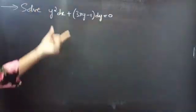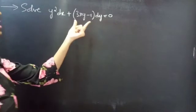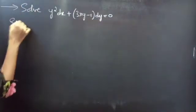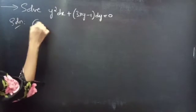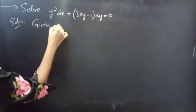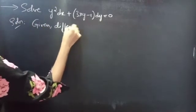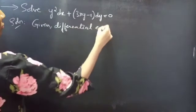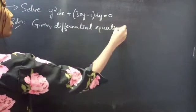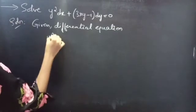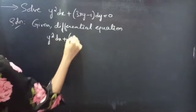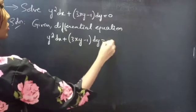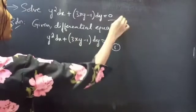Problem. Solve: y² dx + (3xy − 1) dy = 0. Solution. Given differential equation: y² dx + (3xy − 1) dy = 0. Consider it as equation 1.